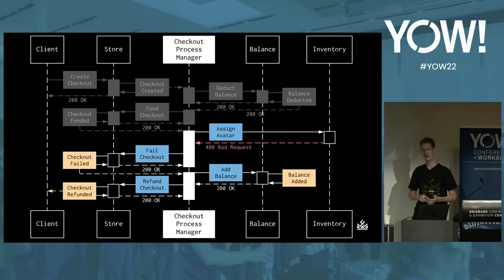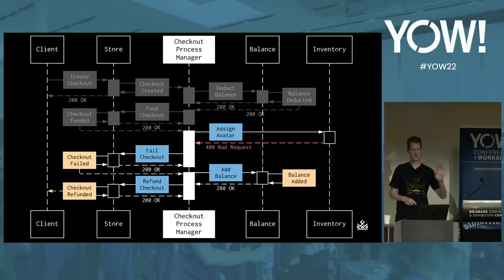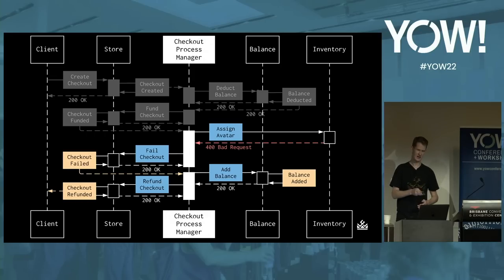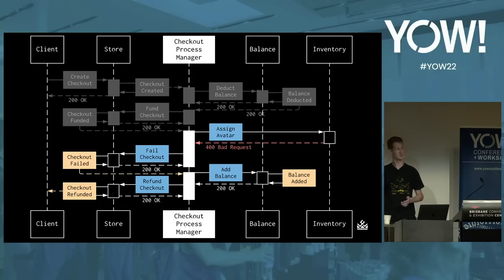We can now also handle unsuccessful workflows due to business constraints. Let's imagine a customer already has an avatar — they can't get two of the same. So if we end up in this state, we need to reverse any operations that have already happened. This workflow has already deducted the customer's balance, so a reverse operation — an 'add balance' command with the same value — needs to be sent and handled. After the assignment fails, a 'checkout failed' event is raised, which triggers the process manager to send an 'add balance' command to the balance service. Upon success, we can notify the store that the checkout is being refunded. Adding the balance back is what's known as a compensating transaction.